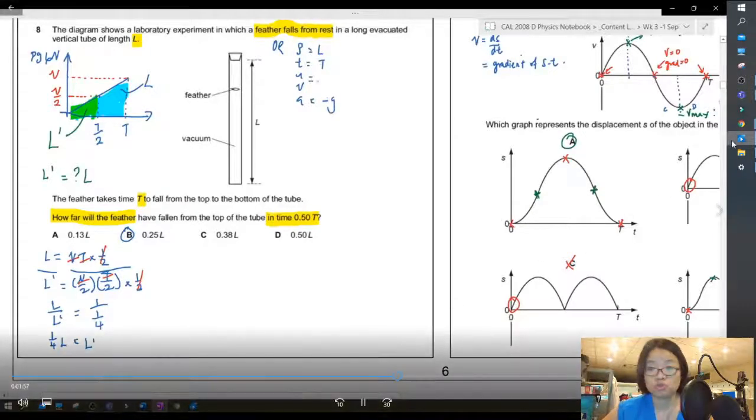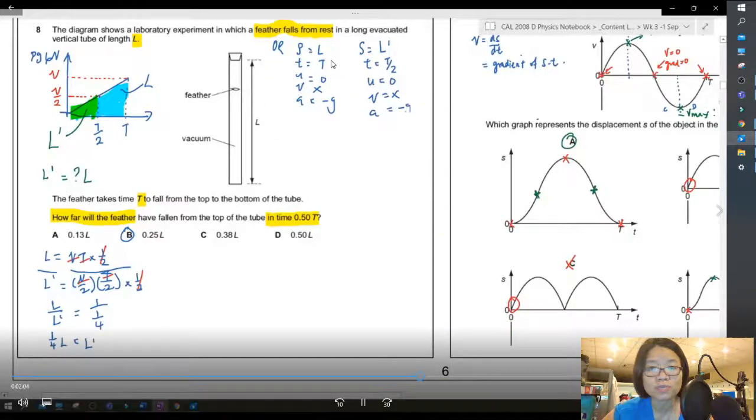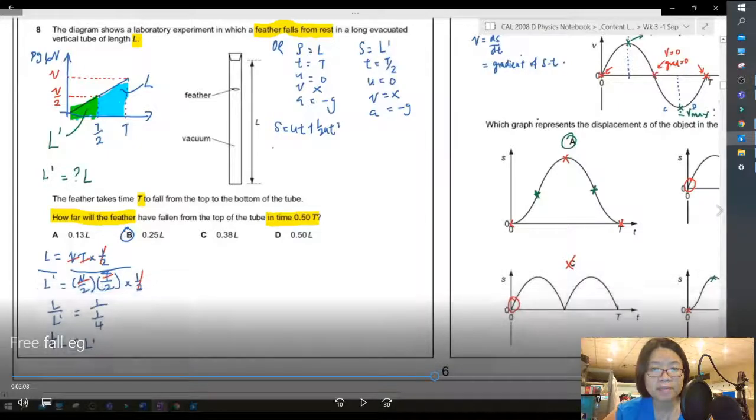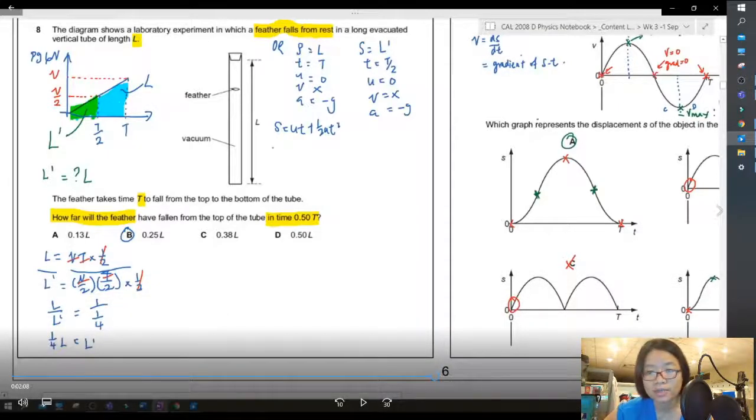Okay, another method is to use your SUVAT method. This one. So I'm going to do SUVAT for the entire length of the tube, which is L and T, and SUVAT for half the time. Okay, so if you list down, right, SUVAT, length of the tube is L. Okay, time taken is T.